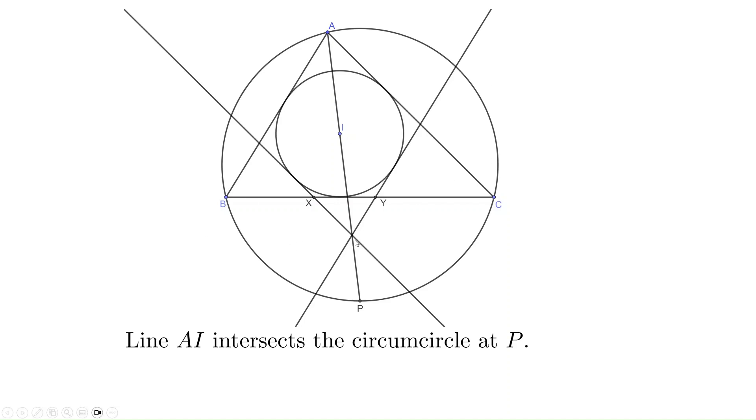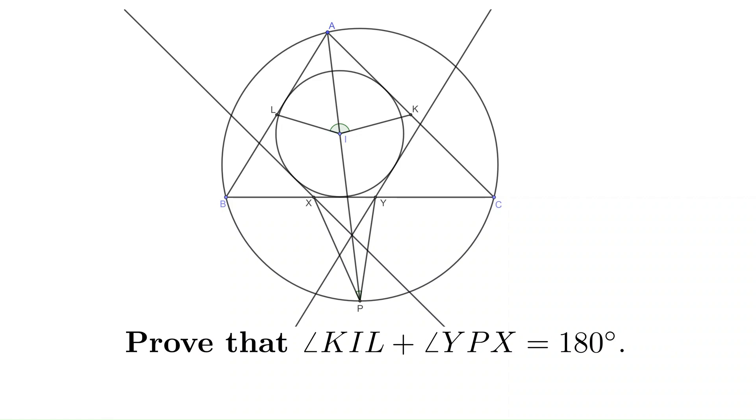This is indeed true. We will prove it later. The midpoints of AC and AB are labeled as K and L respectively. We want to prove that angle KIL plus angle YPX is equal to 180 degrees.